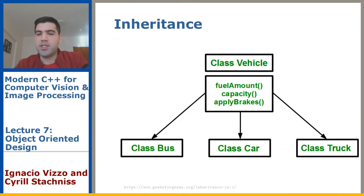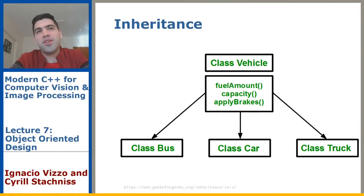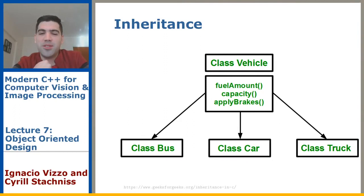Let's start with a simple example. Let's pretend that for some reason you want to model vehicles in your city. Typically you'd start coding separate models — you'd have a bus, a car, and a truck. The idea behind object-oriented design is to reuse code and group objects that belong together in a class hierarchy.